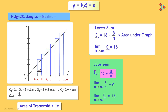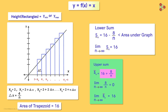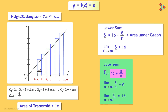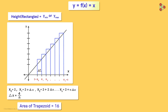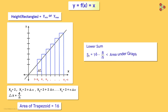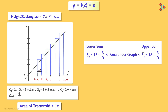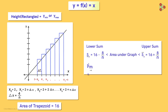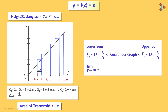Therefore, the height of the rectangles can be the minimum y values in each sub-interval or the maximum y values. In the first case we get the lower sum, and in the second we get the upper sum. In the limit as n tends to infinity, both sums approach the area under the graph.